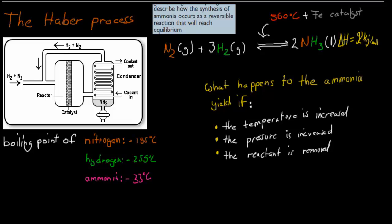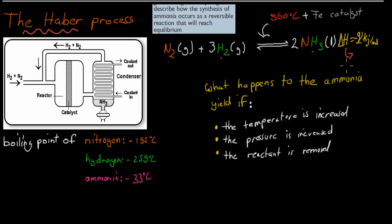So first, what I want to talk about is the actual process — it's called the Haber process. This is the process we use to combine nitrogen gas and hydrogen gas to form ammonia. It was named after the person, Haber, who developed it. The chemical reaction involves nitrogen gas and hydrogen gas forming ammonia. It's also exothermic — there should be a minus sign — which means if ammonia is produced, it releases energy, it releases heat.